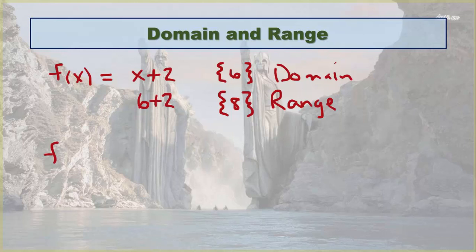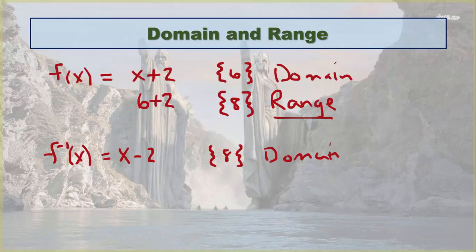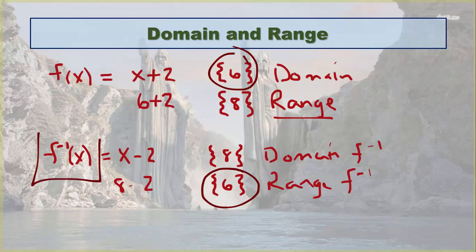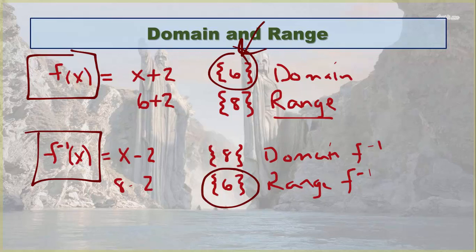The inverse function, instead of being x plus 2, logically it's x minus 2. And if we plug in the number that we just got, that would be the domain of the inverse. 8 minus 2 is 6. That is the range of the inverse. We ended up exactly where we started. This function right here completely undid that function, leaving us right back where we started. That's the idea behind the domain and the range of the regular function and the inverse function.